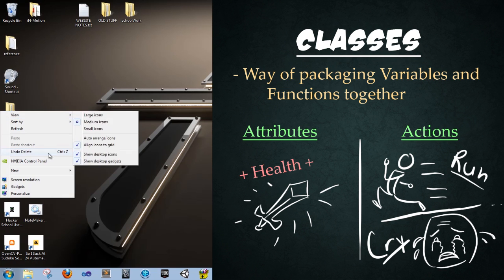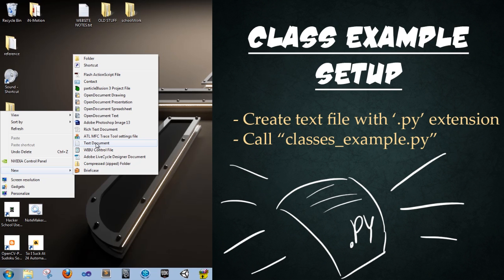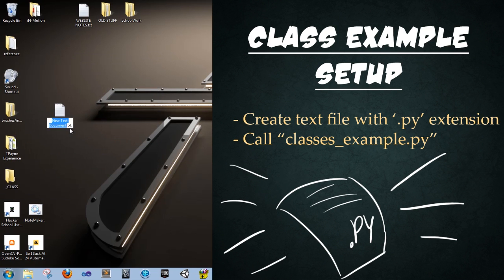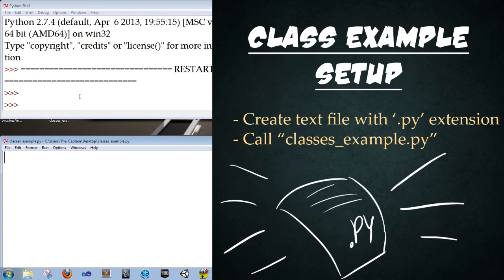So how do we use them? Well, let's go ahead and create on our desktop a class file. And I'm just going to do that by creating a text document. And we're going to call this classes_example.py. It's asking me if I want to change the file extension. Click yes. And then I'm going to go ahead and right click and edit with idle. So I have idle open. I have the Python file down below and then the shell up above.